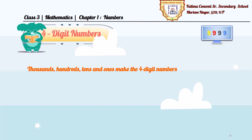Thousands, hundreds, tens, and ones make 4-digit numbers. That means, in a 4-digit number, there are 4 place values: ones, tens, hundreds and thousands.